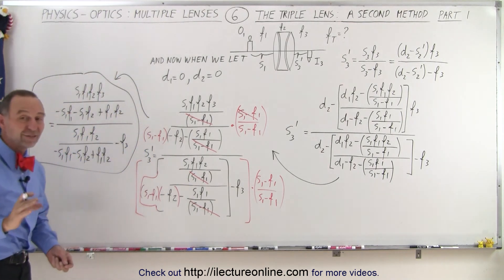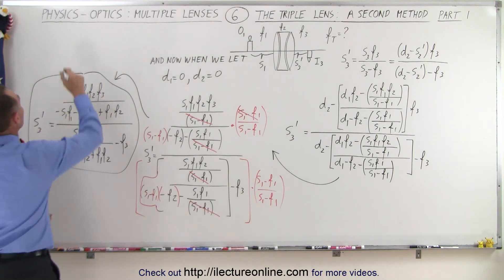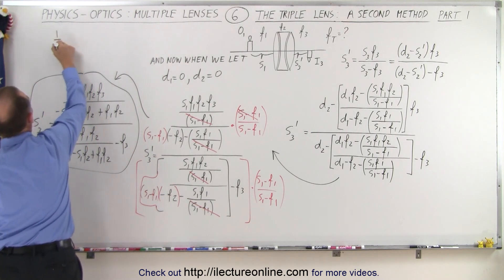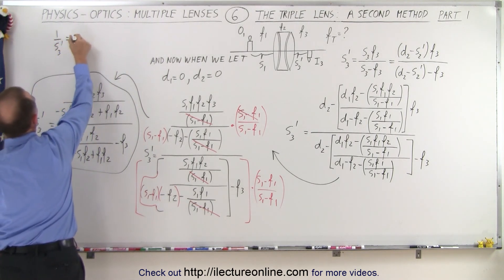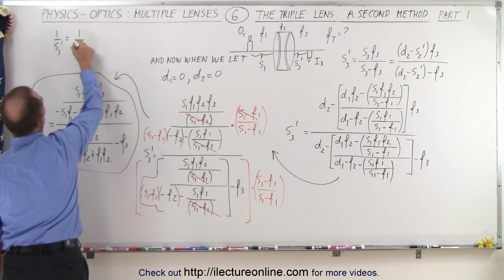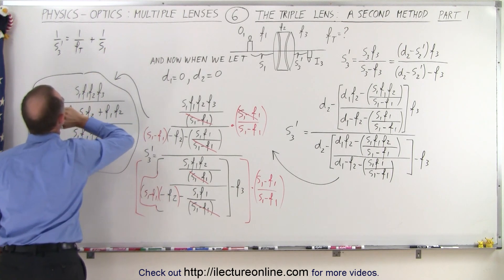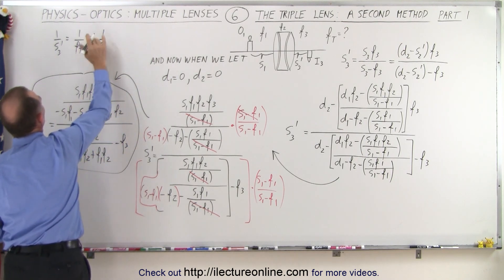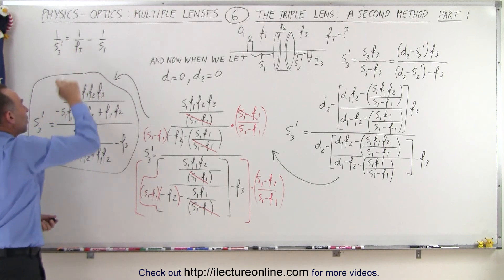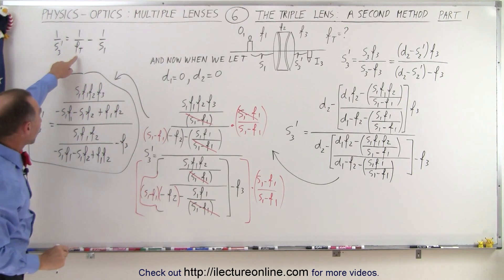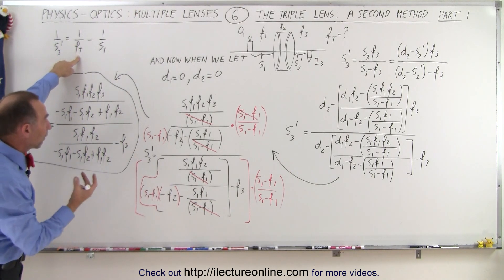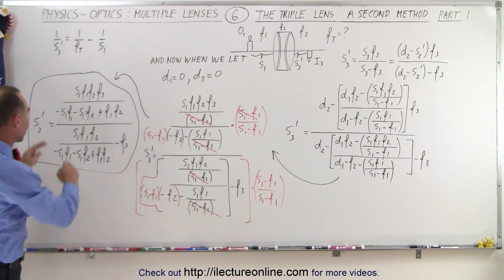Of course, we're by no means ready yet to put into format something that looks like this. 1 over S3 prime is equal to 1 over F total plus 1 over S1. Let's see, that's going to be minus, right? Because we isolate that. So that's the equation we want to end up at.